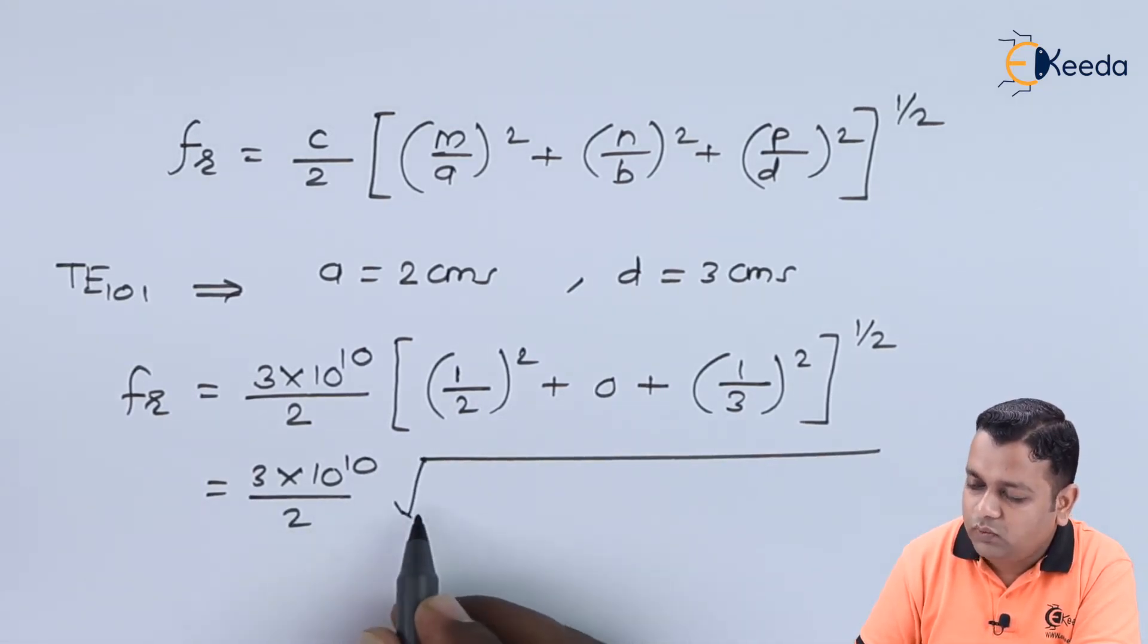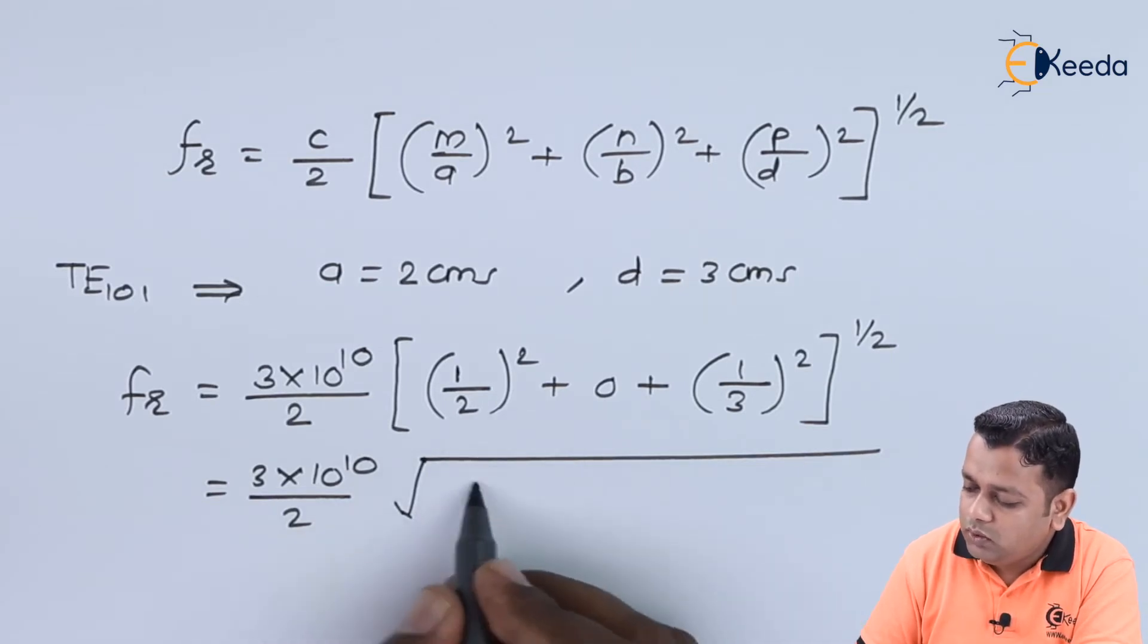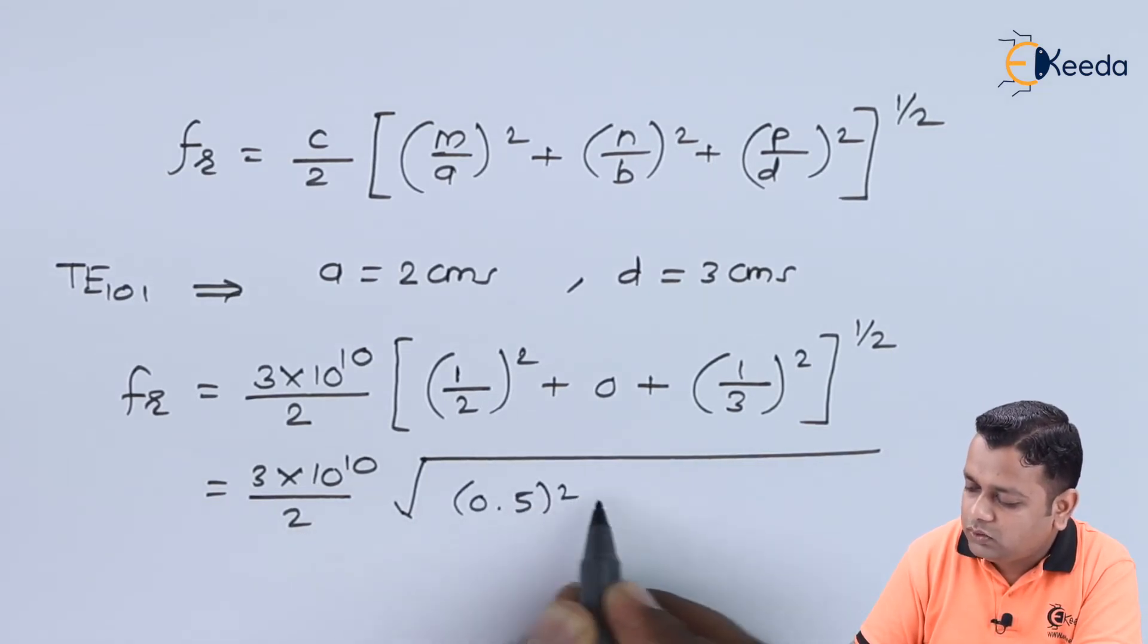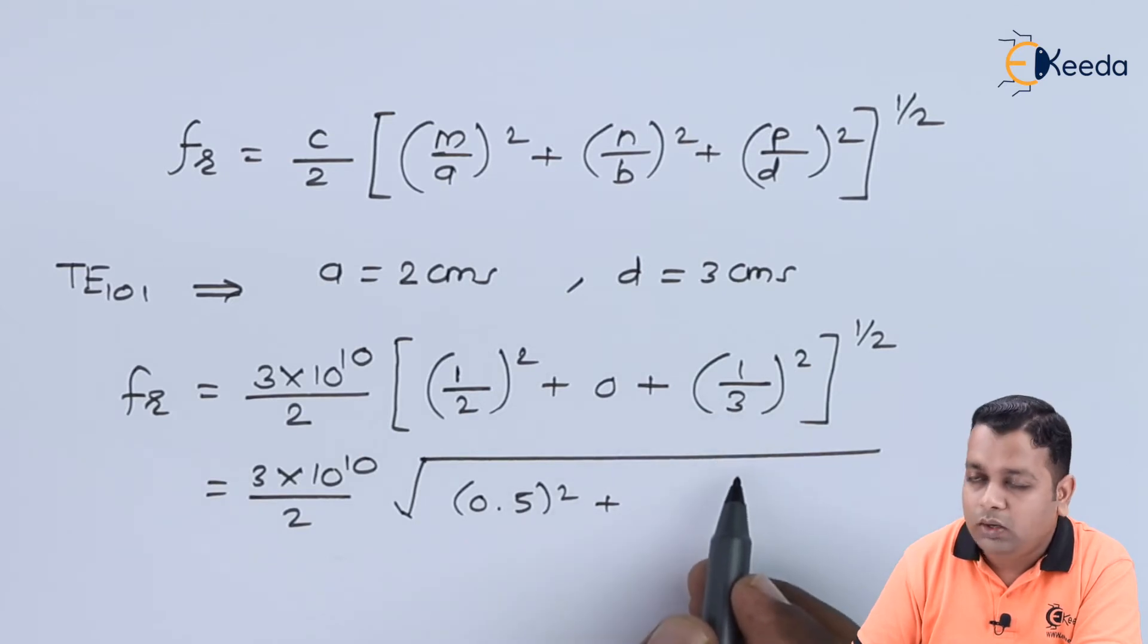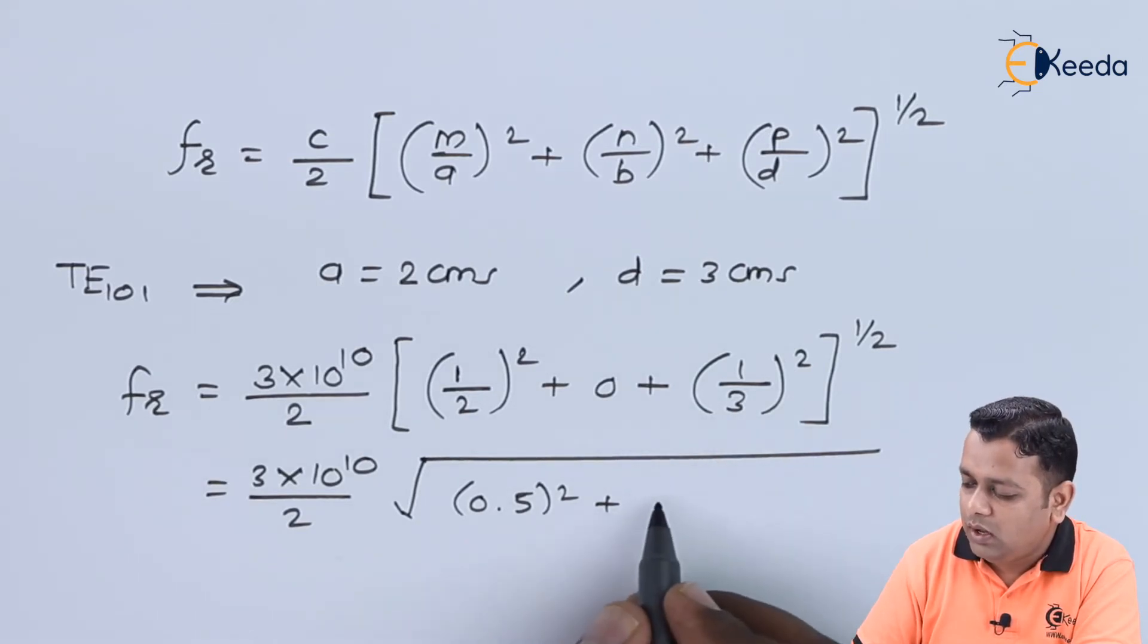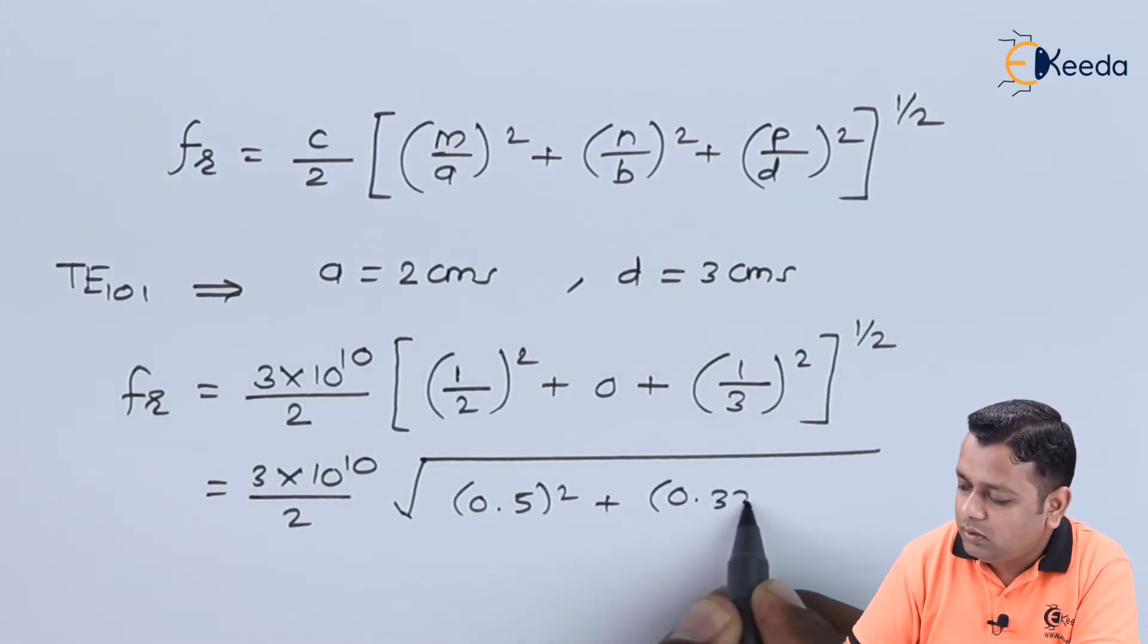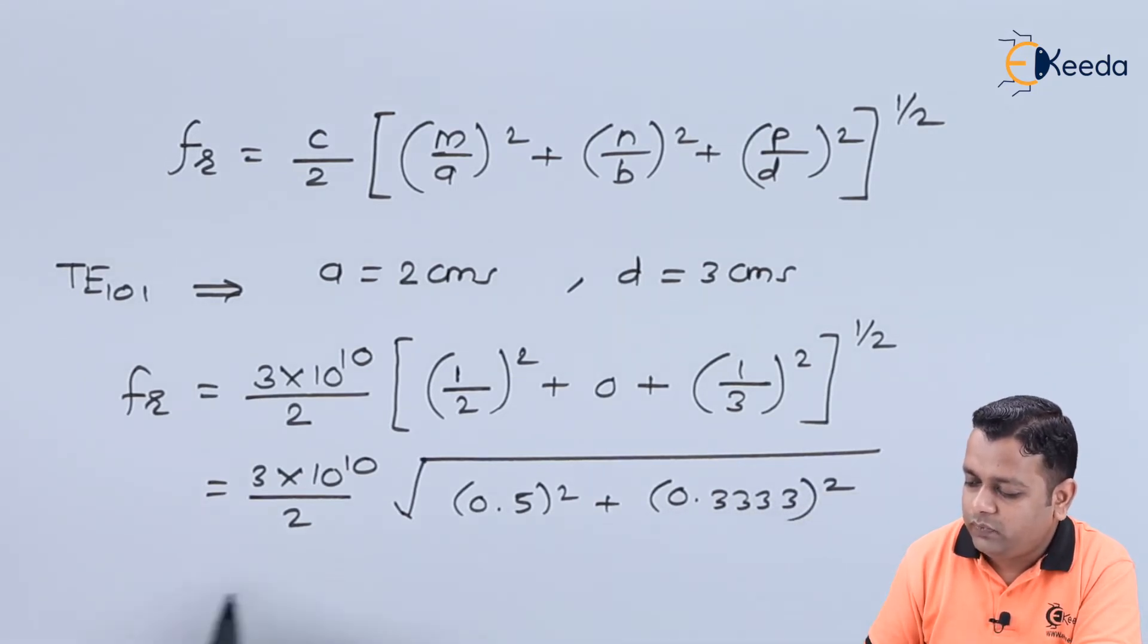Under square root: 1 by 2 is 0.5 squared, added with 1 by 3, which is 0.3333, squared.